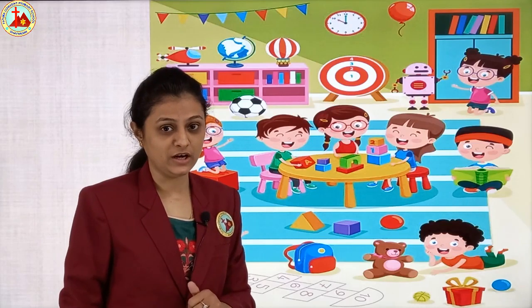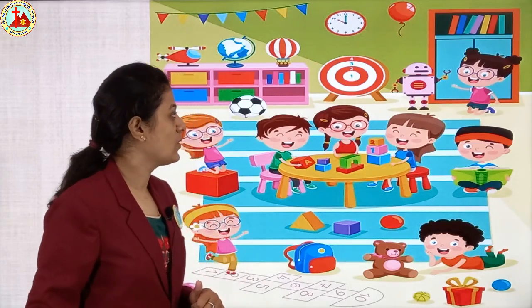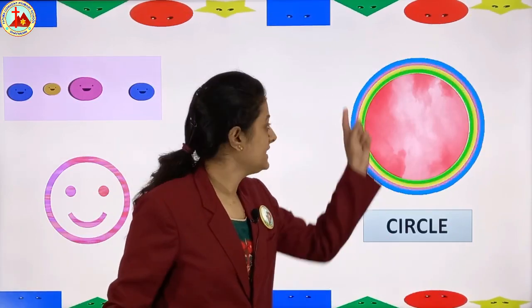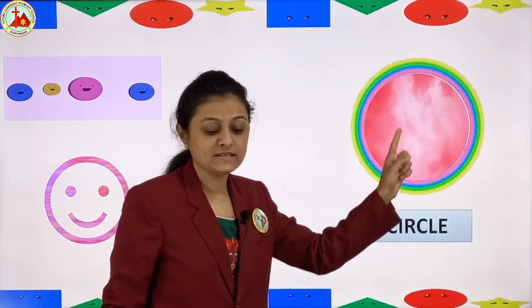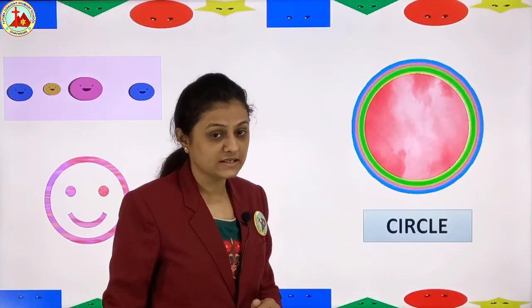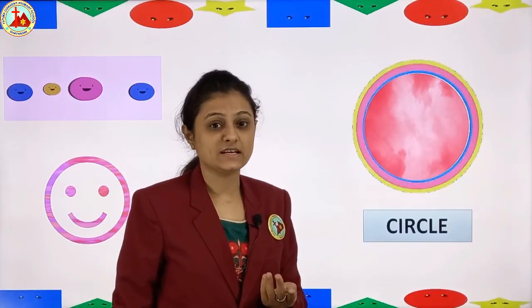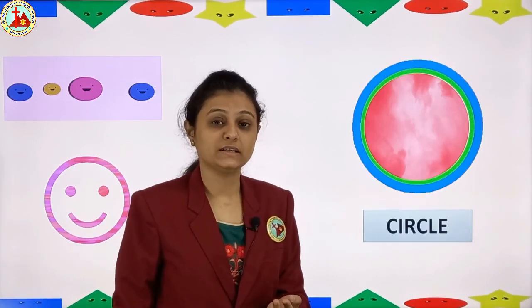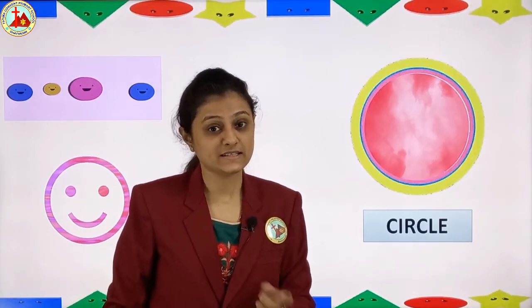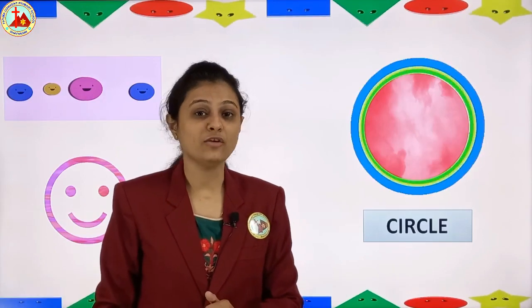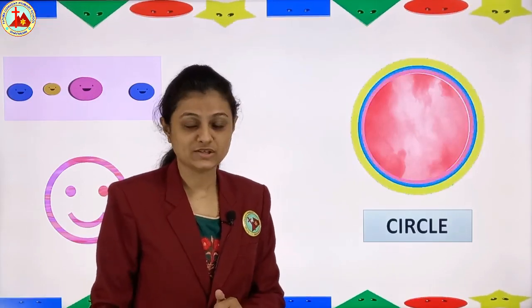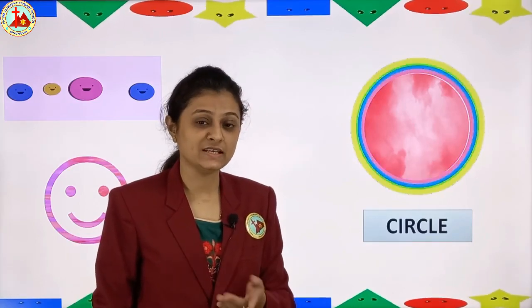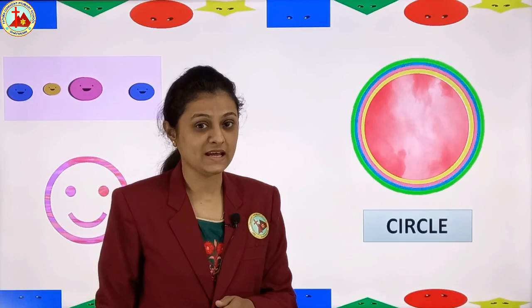So are you all ready to learn? The first shape is circle — it is round in shape. You can see so many things that are circle in shape: the clock, the button, bangles, the wheel — all are circle shape. The yummy pizza which you eat is also circle in shape.